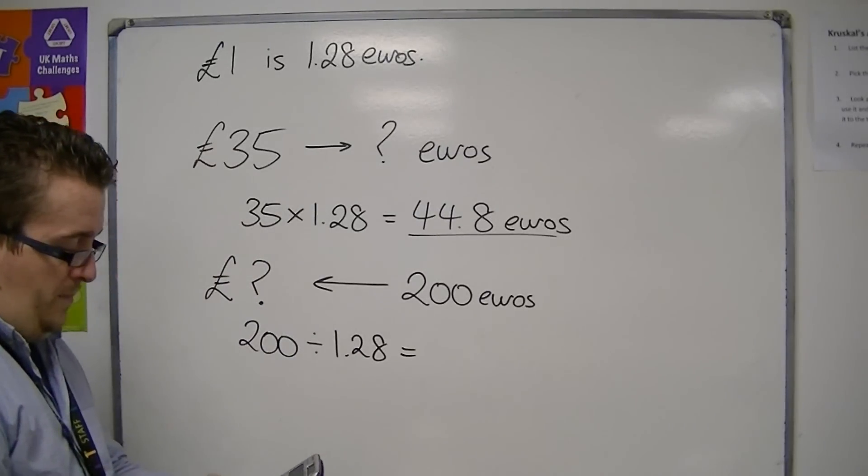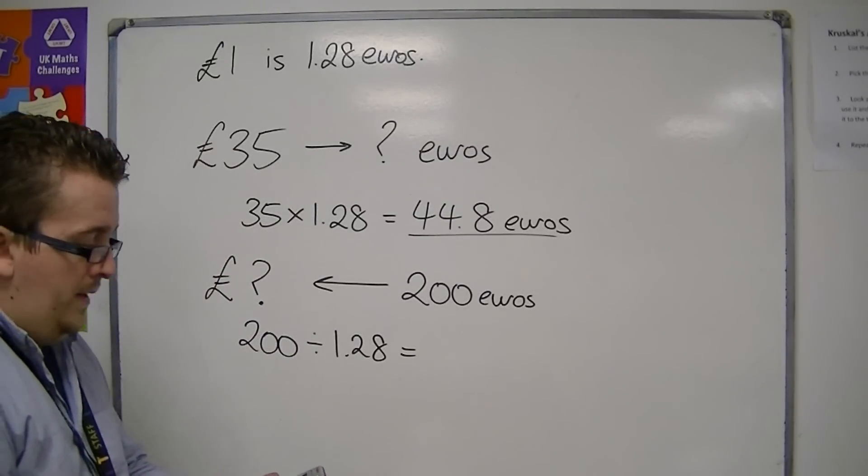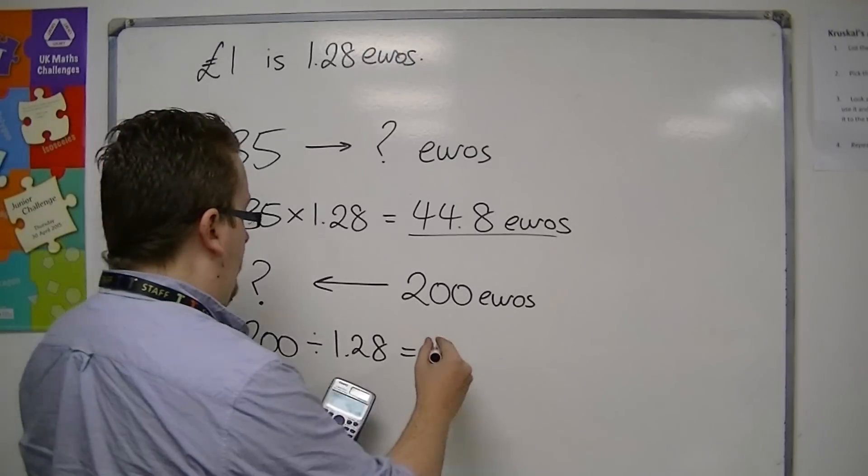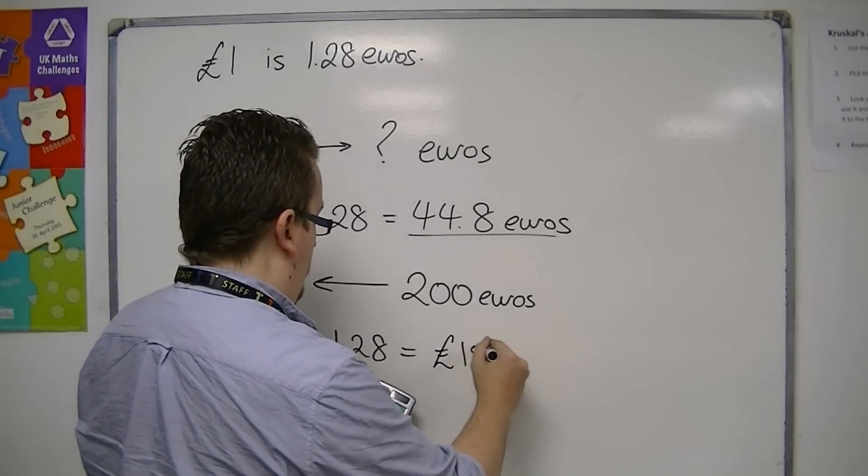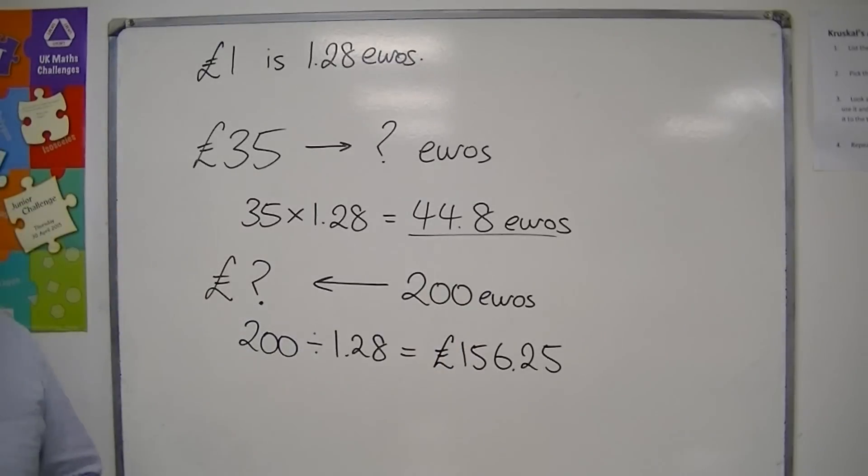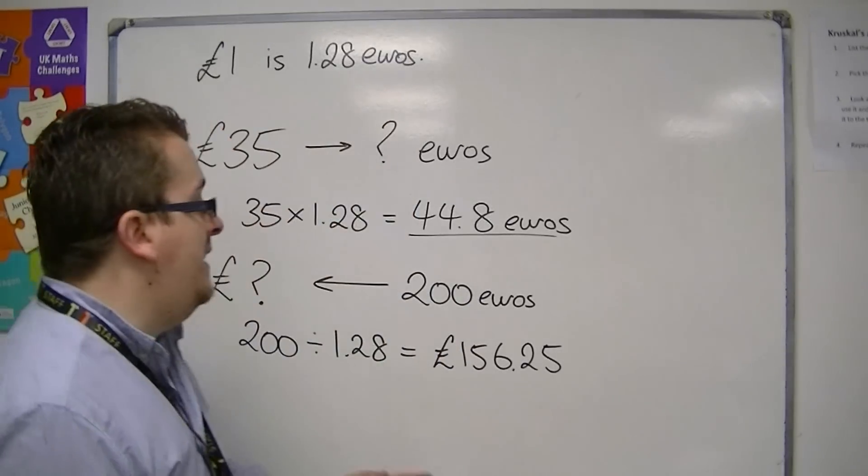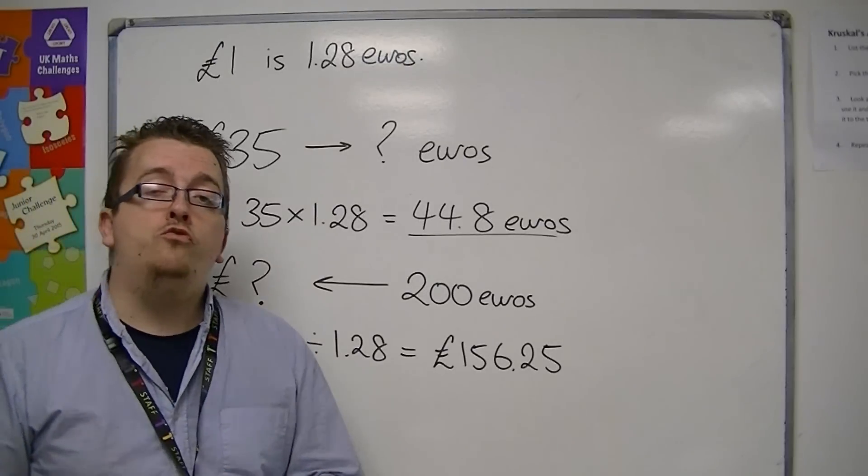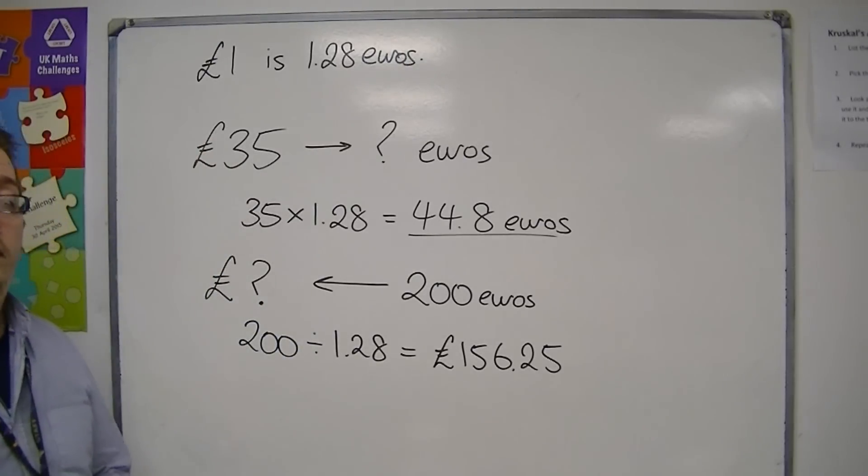So we do 200 divided by 1.28. So 200 divided by 1.28 is 156 pounds 25. So 200 euros is 156 pounds 25. And any calculation that you do, make sure that you round it to the nearest penny.